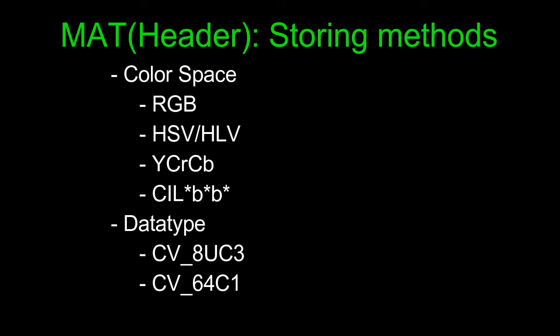Mat header contains the storing method, which is further decomposed into two terms: color space and data type. Color space represents the space from where the colors are being taken to construct pixel values. There are a few of them listed below: RGB, HSV, HLV, and so on.